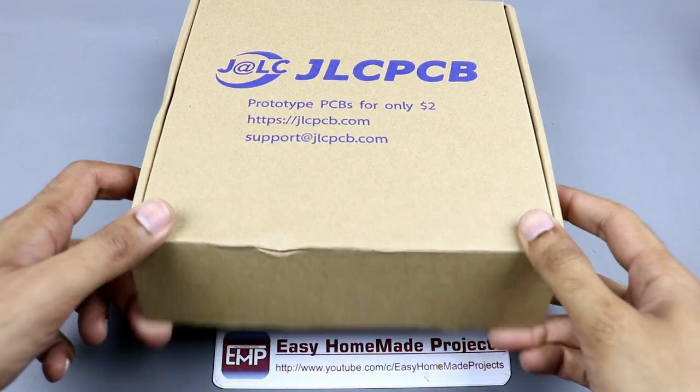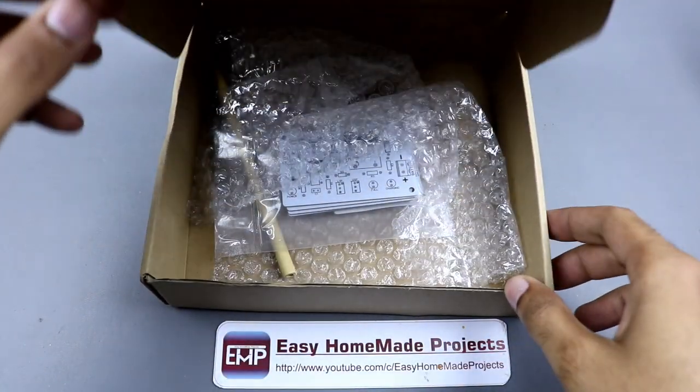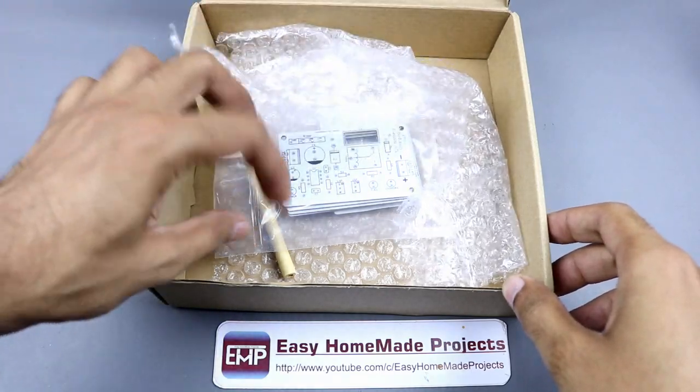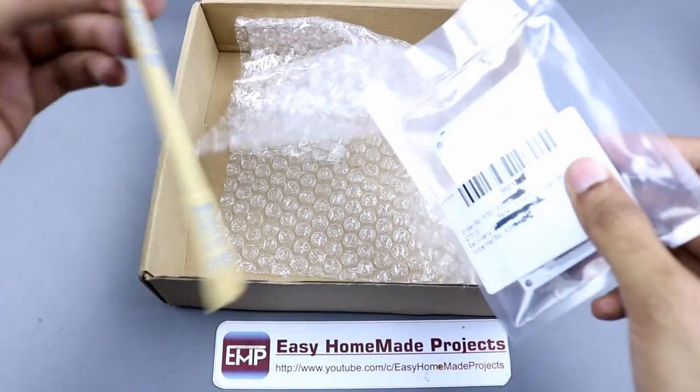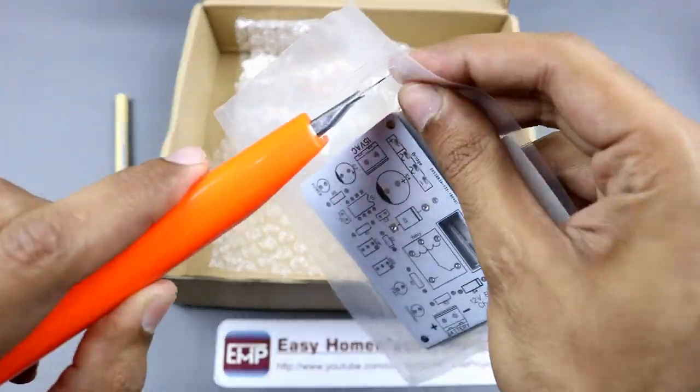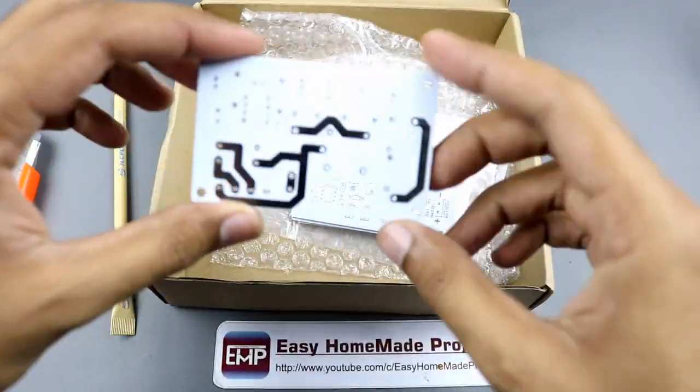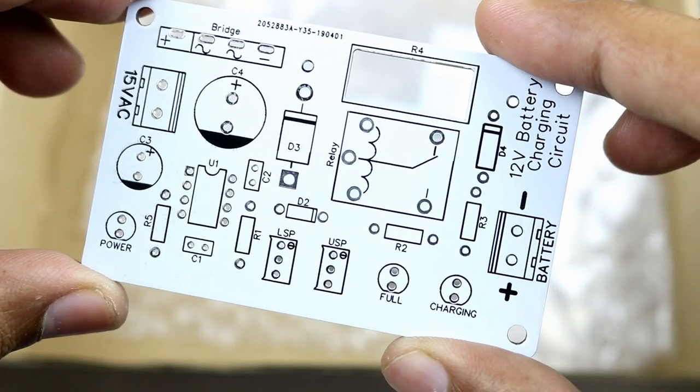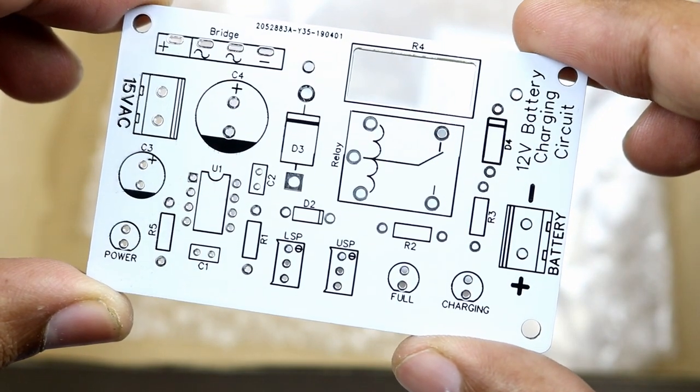So after some days, I received our circuit boards from jlcpcb. This time I chose white color which looks really cool as well.